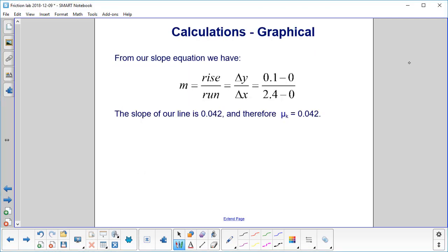Our slope m is rise over run, or delta y over delta x. We put in the numbers we found from the previous graph. The slope is 0.042. Therefore, mu k is 0.042.